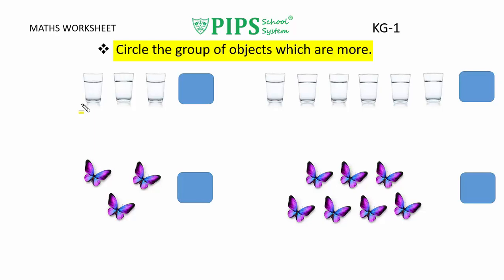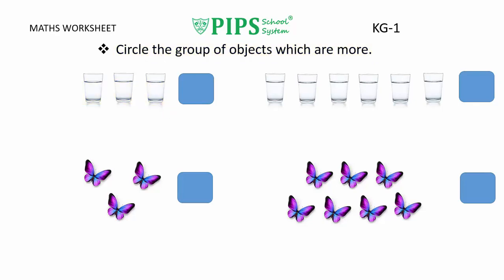KG1 students, count with me how many objects are in the first group. Let's count: 1, 2 and 3. How many objects are in the first group? There are 3 objects in the first group.